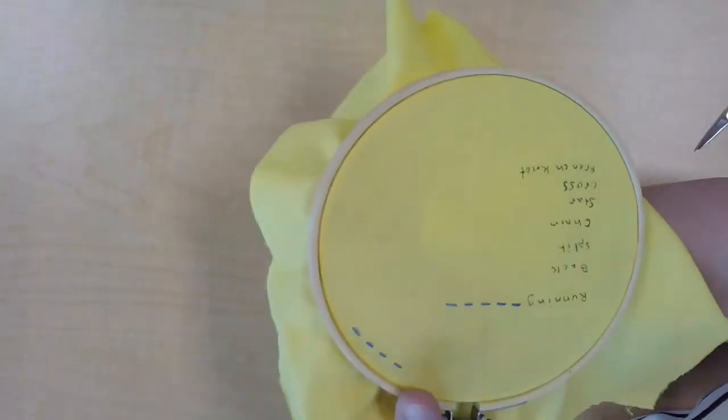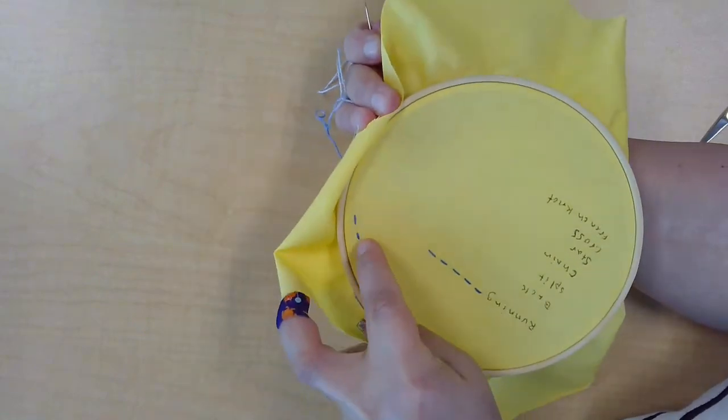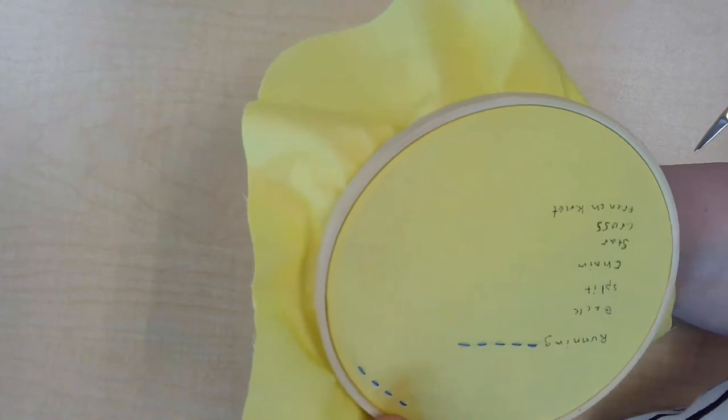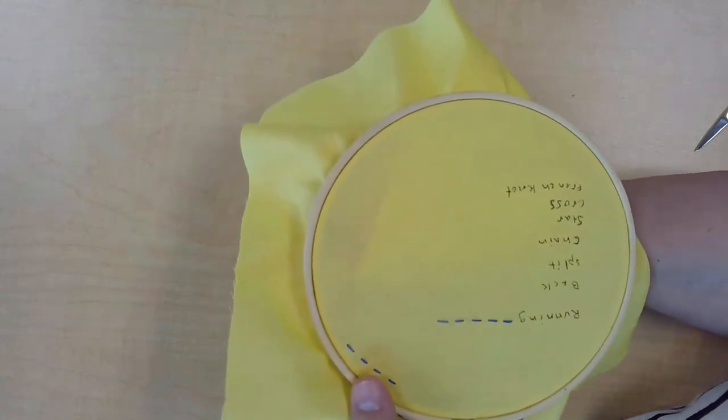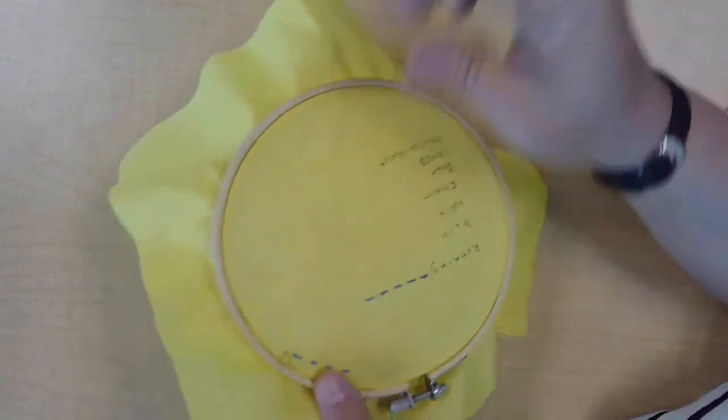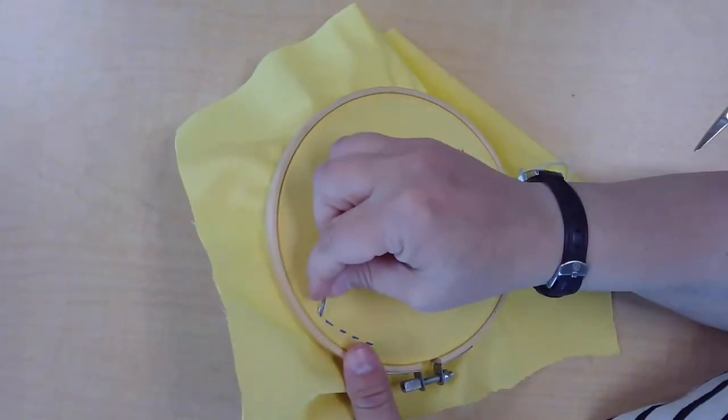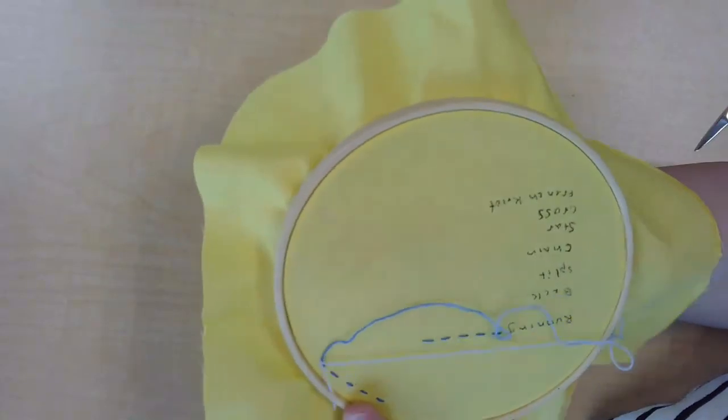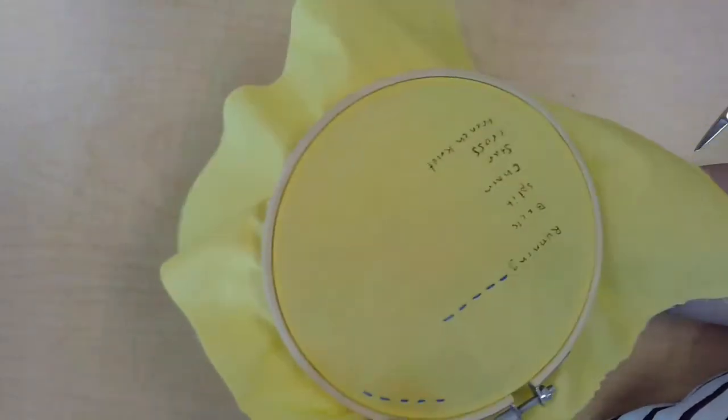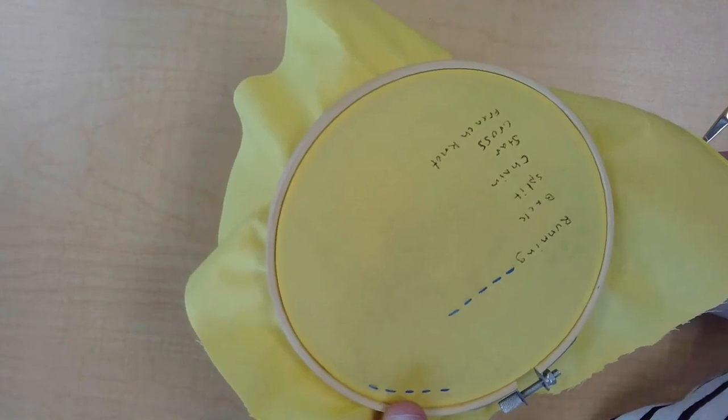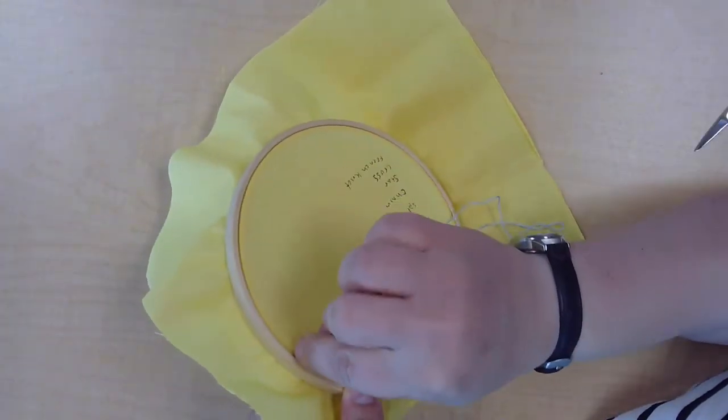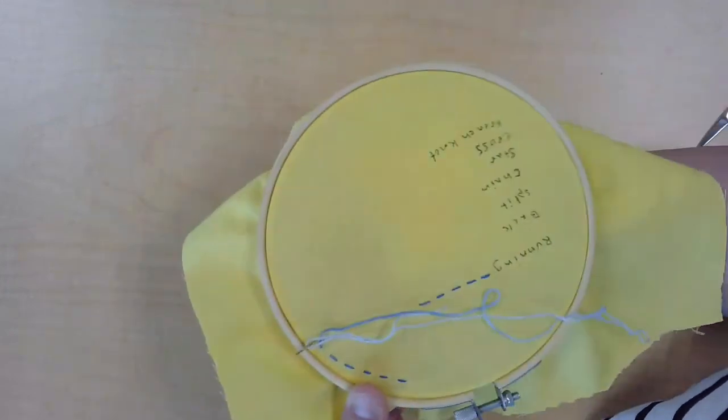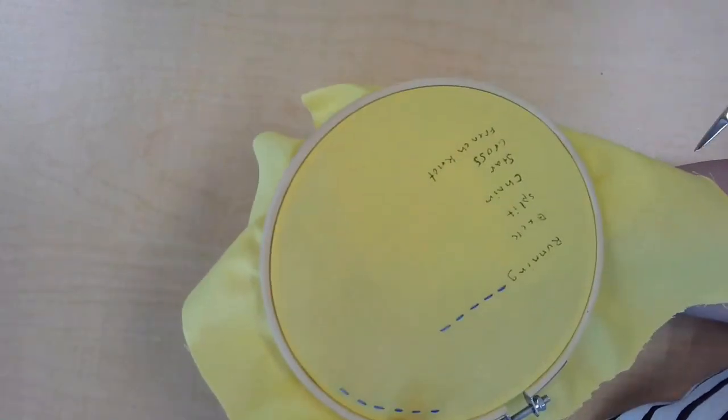Remember that the key here with the running stitch is consistency in the size of your stitches. You want to try and keep them the same size and the same space apart. Keep working at it. The more you practice, the better you get.